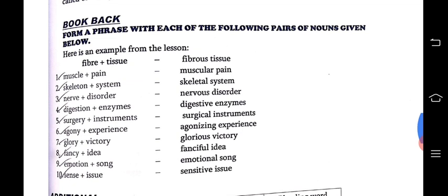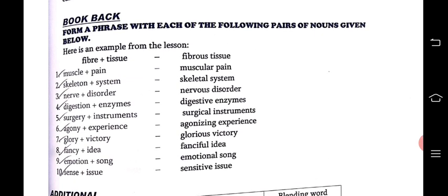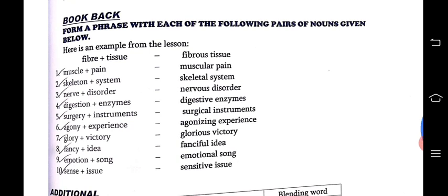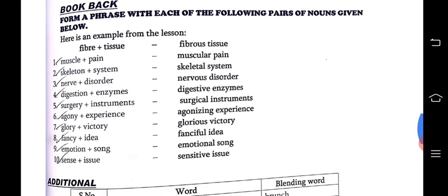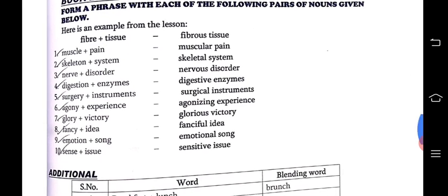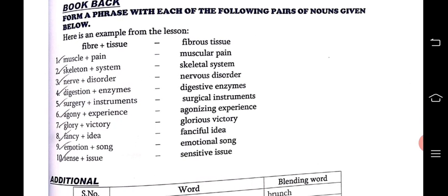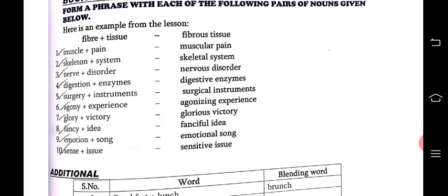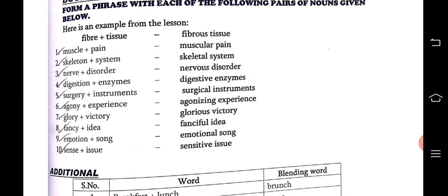The textbook blended word exercises: fiber + tissue = fibrous tissue; muscle + pain = muscular pain; skeleton + system = skeletal system; nerve + disorder = nervous disorder; digestion + enzyme = digestive enzyme; surgery + instrument = surgical instruments; agony + experience = agonizing experience; glory + victory = glorious victory; fancy + idea = fanciful idea; emotion + song = emotional song; sense + issue = sensitive issue.